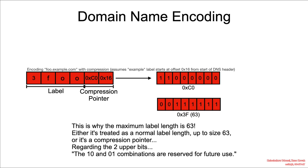So, either it is treated as the normal label of up to size 63, or it's a compression pointer, and you need to read the following byte. Regarding the upper two bits, the 1-0 and 0-1 combinations are reserved for future use.